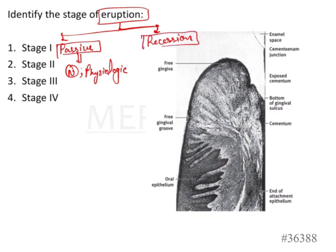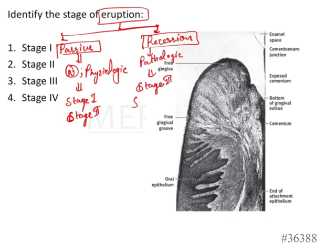Recession is generally considered pathologic, although some people argue it can also be normal. For now, we consider it a pathologic form of eruption. Passive eruption is seen in Stage 1 and Stage 2, while recession is generally seen at Stage 3 and Stage 4.